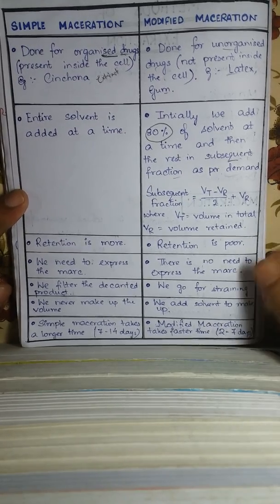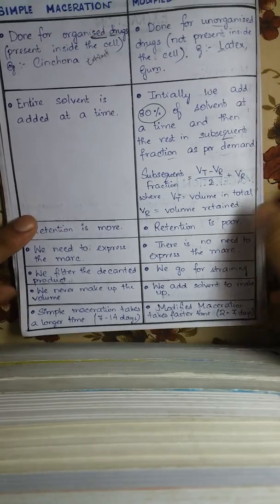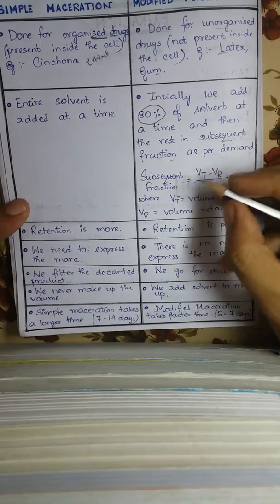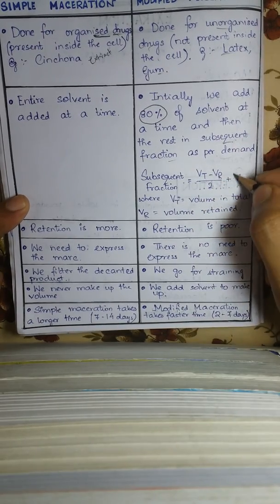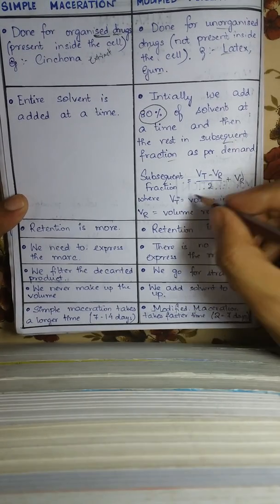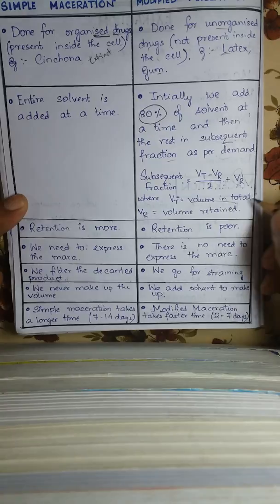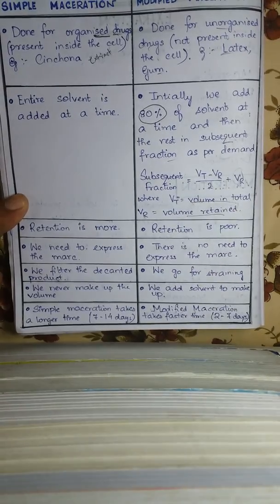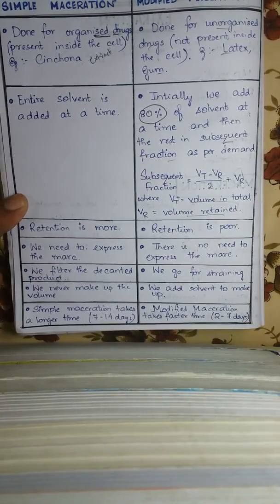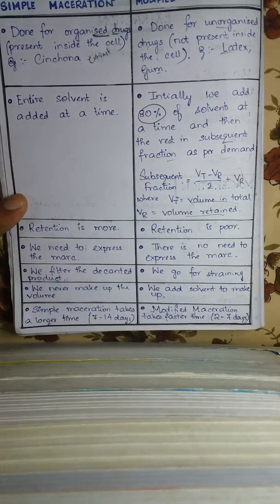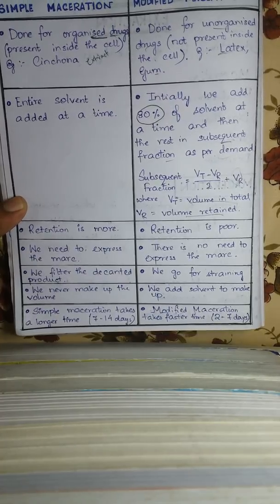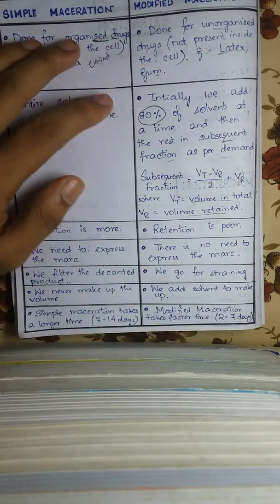The subsequent fraction is calculated using the formula: (Vt − Vr) / 2 + Vr, where Vt is the total volume and Vr is the volume retained. This is the basic formula for calculating the subsequent fraction.